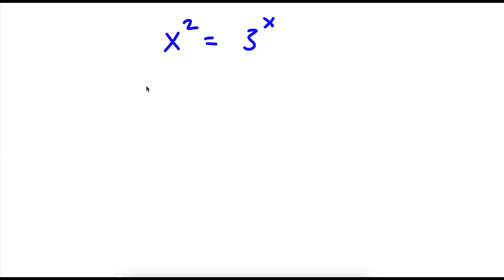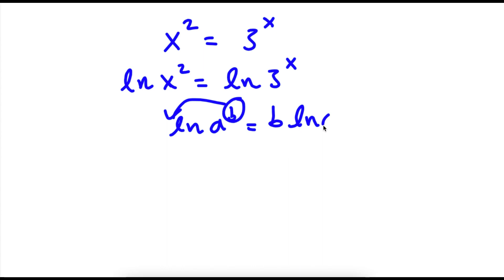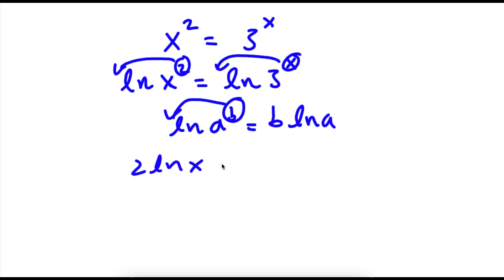The first thing I'm going to do is take the ln on both sides. So now I have ln of x squared is equal to ln of 3 to the power of x. Now if I have something in the form ln of a to the power of b, I can move this b to the front, so this equals b times ln a. So now I have 2 times ln x is equal to x times ln 3.